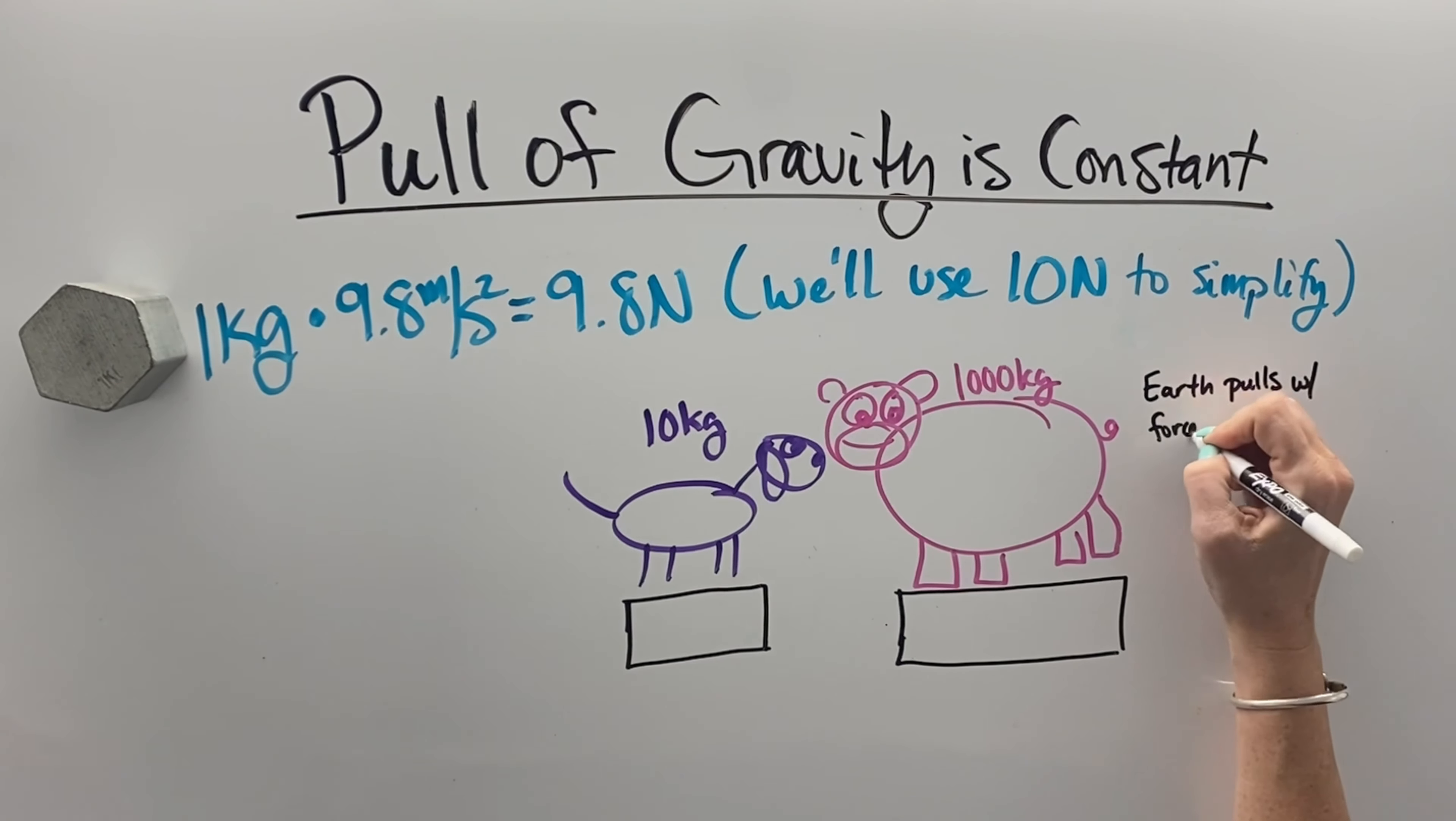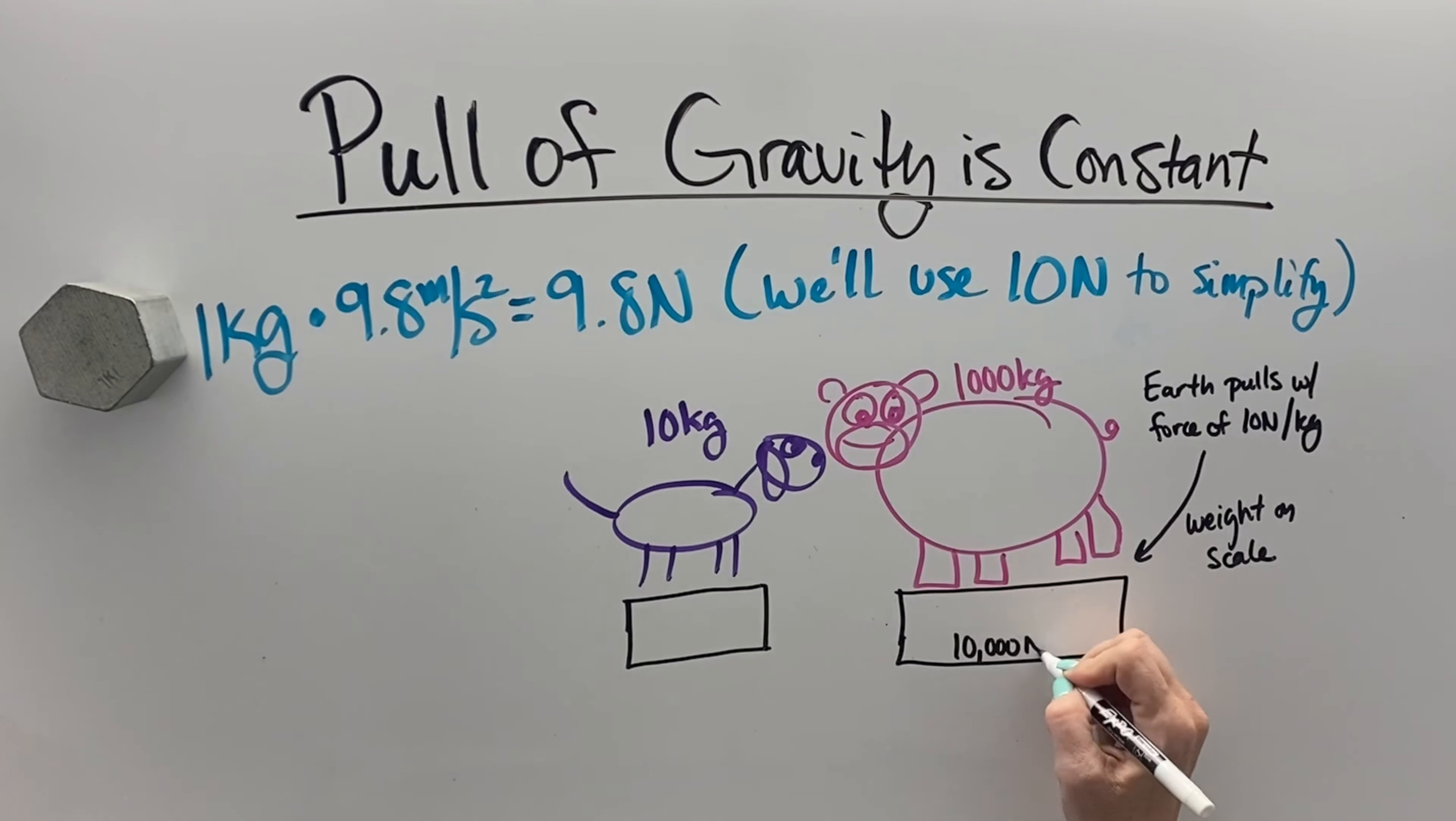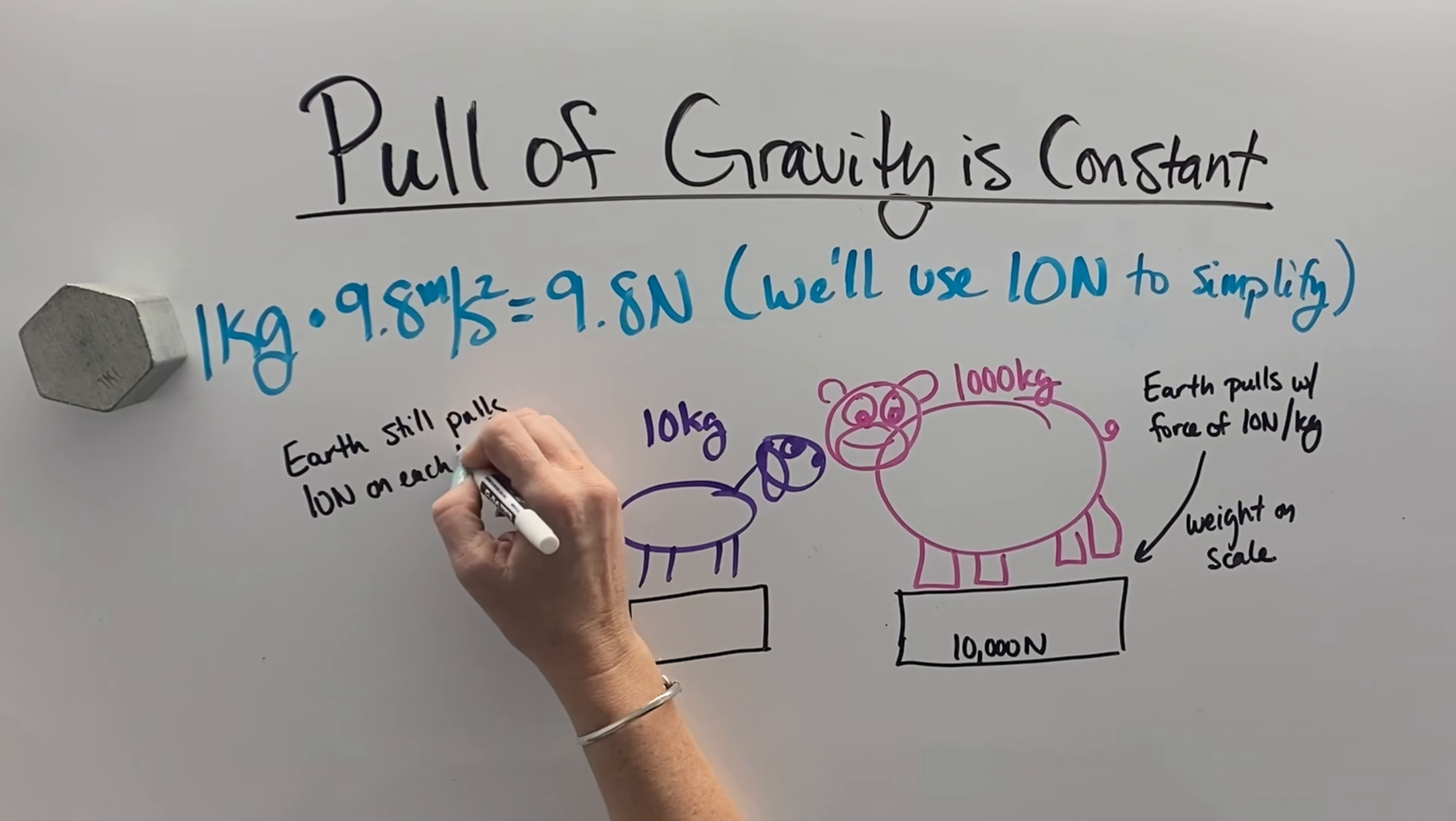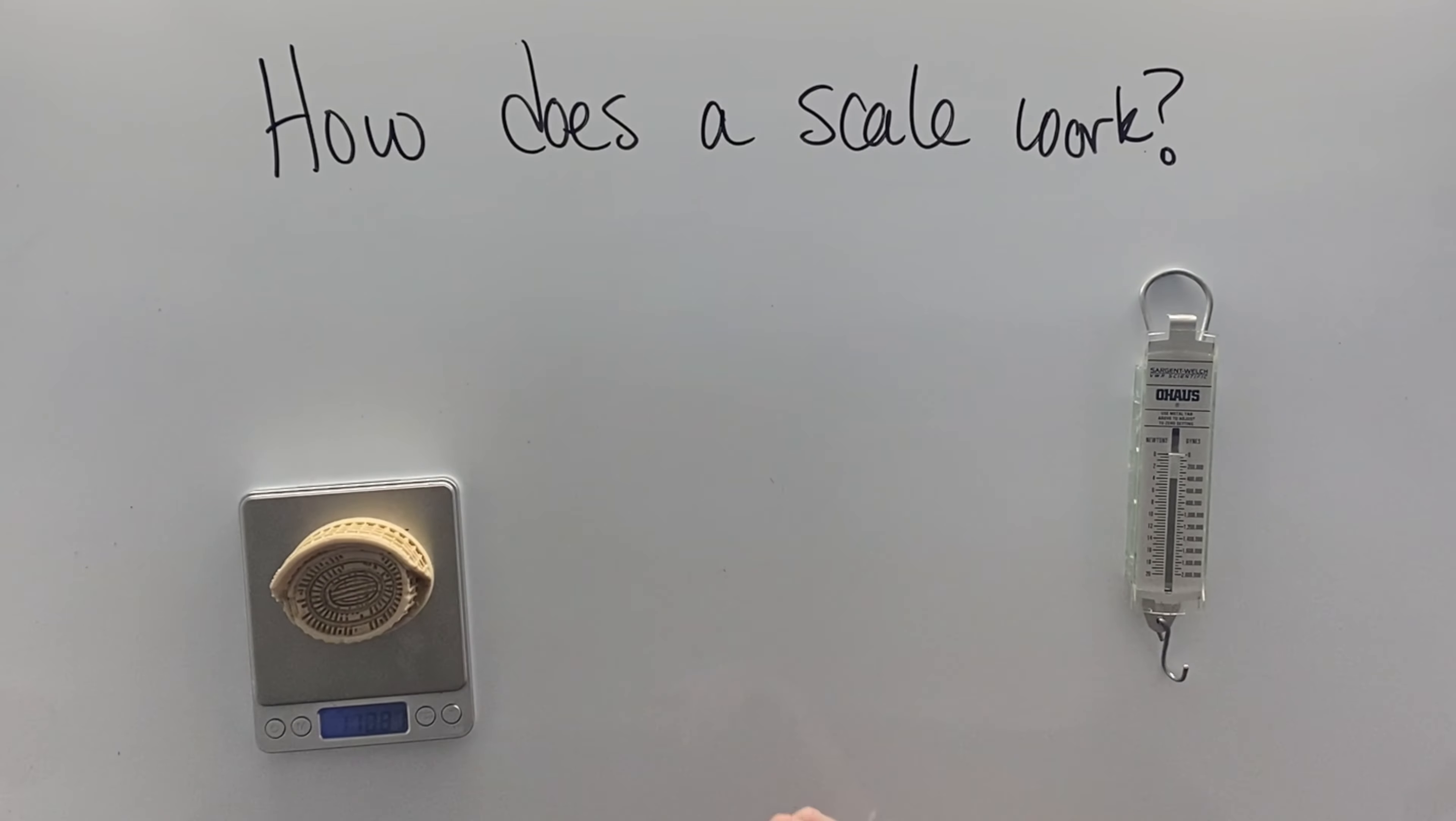If we start with a 10 kilogram dog and a 1,000 kilogram hippo, the Earth will pull on every kilogram of the hippo with a force of 10 newtons, which means the hippo would weigh 10,000 newtons. The Earth will pull on every kilogram of the dog with 10 newtons of force, which means the dog would weigh 100 newtons.